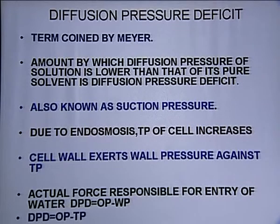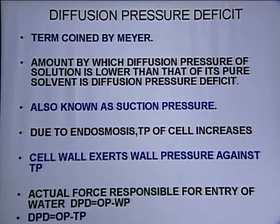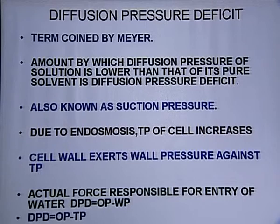Now let's see what force is responsible for the entry of water — that is DPD, diffusion pressure deficit, which is equal to osmotic potential minus wall pressure. Since wall pressure is equal and opposite to turgur pressure, DPD is equal to OP minus TP.